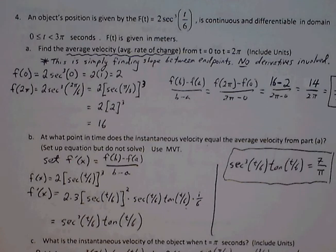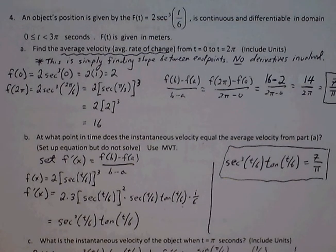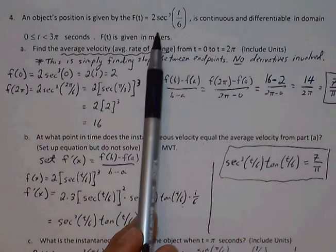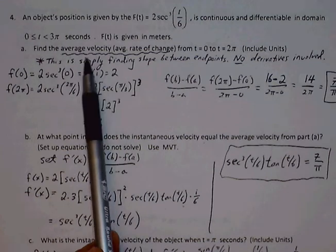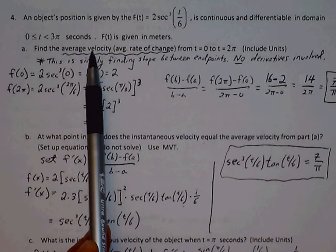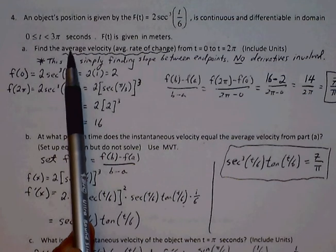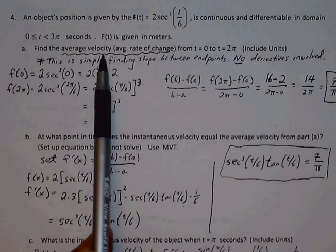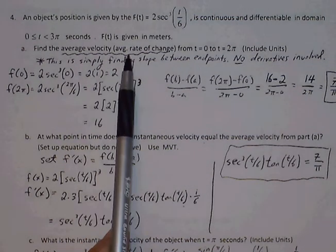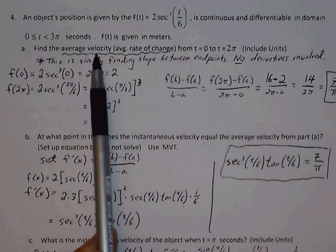It says find the average velocity from 0 to 2 pi. So we're given the position function and we're asked about the average velocity. Normally when you see velocity you're thinking you've got to find the derivative. Here this is asking for the average velocity, so think of this as average rate of change, meaning that we're just finding slope.